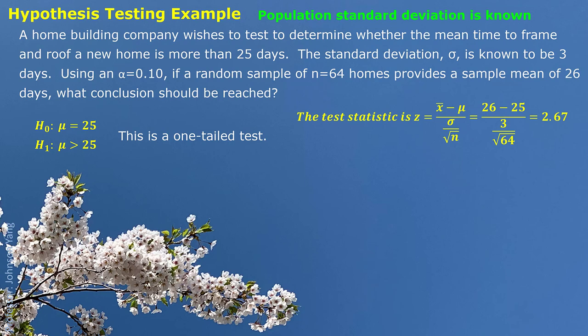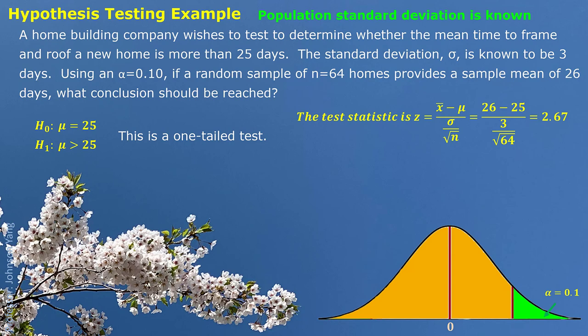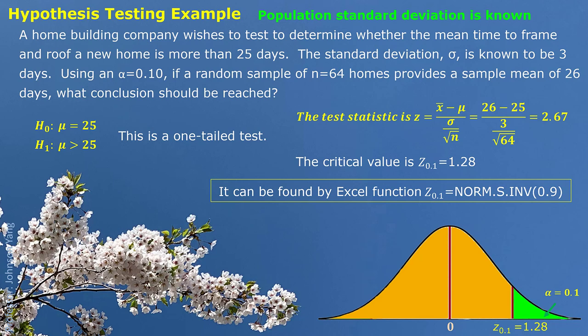We calculate the test statistic — the standardized sample mean gives us 2.67. With significance level 10%, we only look at the right side. The critical value from that right-side tail is 1.28, found easily from Excel using the cumulative probability of 0.9. Since the test statistic 2.67 is greater than 1.28, we reject the null hypothesis.